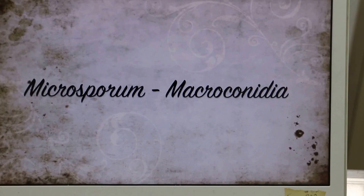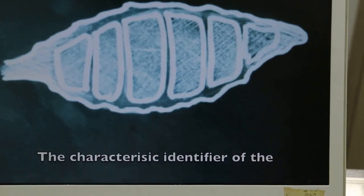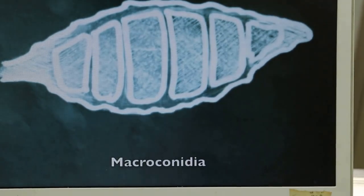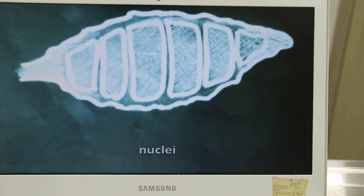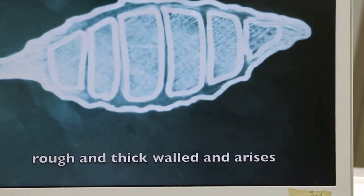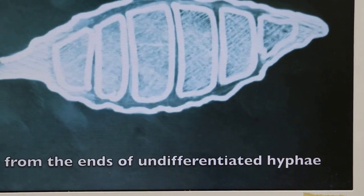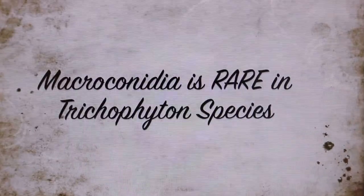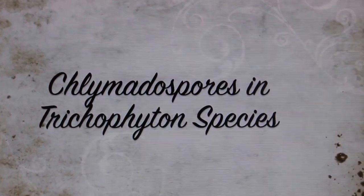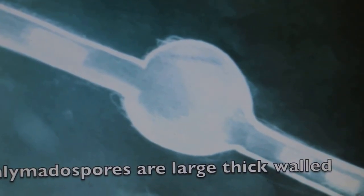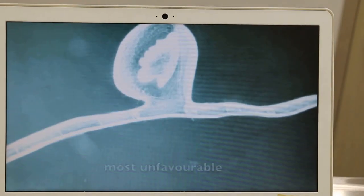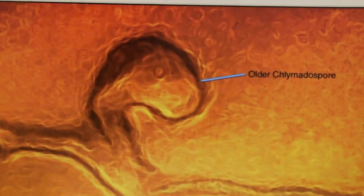The characteristic identifier of the Microsporium species is actually the macroconidia. It is a structure that has three or more nuclei. It occurs in large numbers and has large, rough and thick walls, and arises from the ends of undifferentiated hyphae.